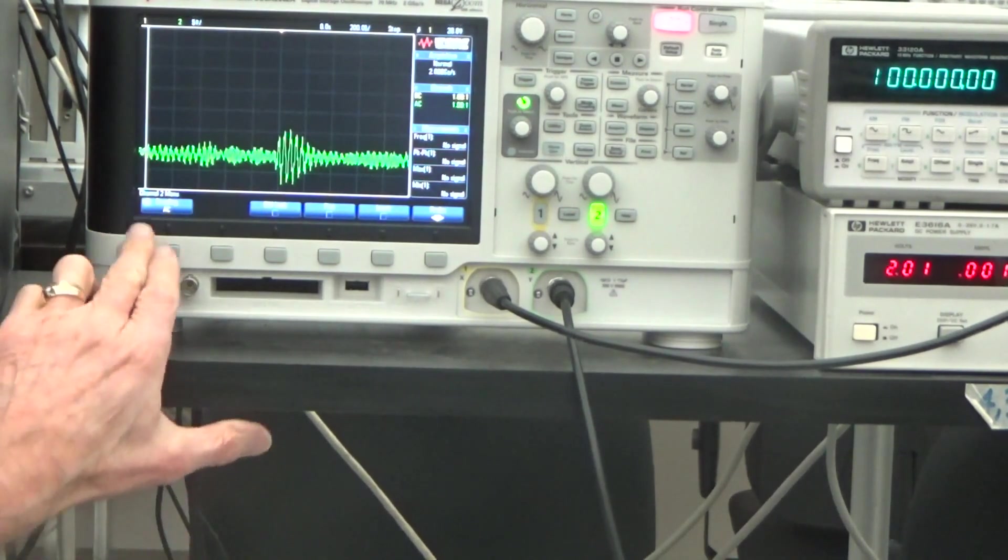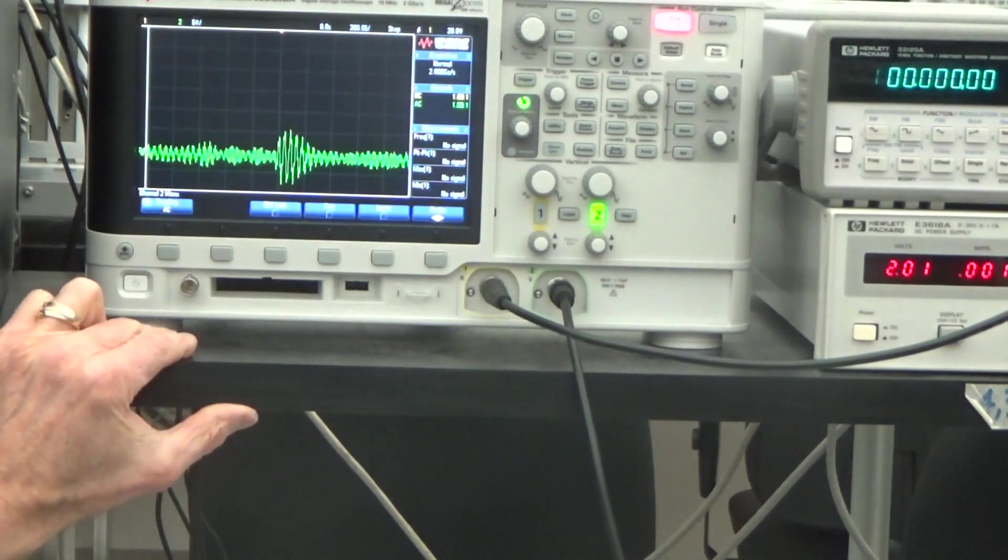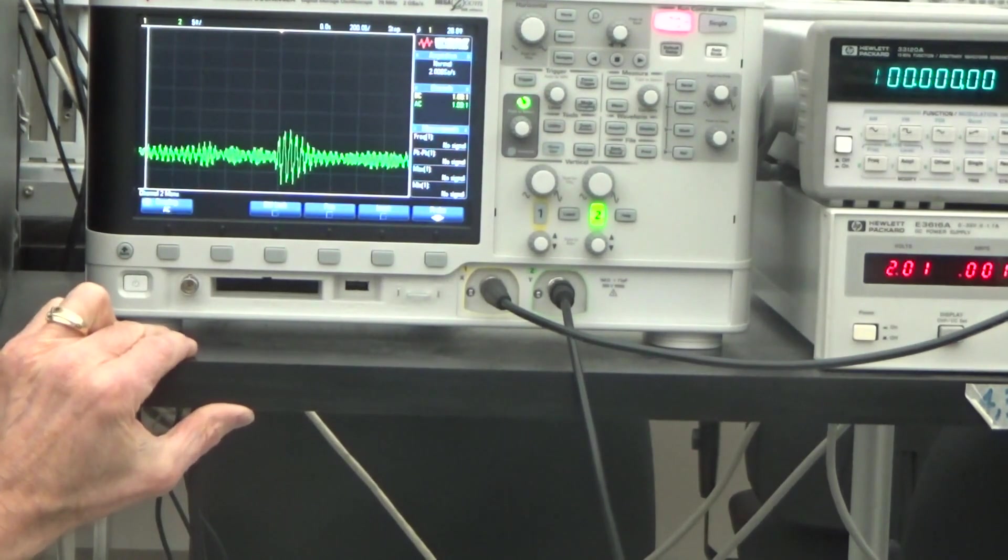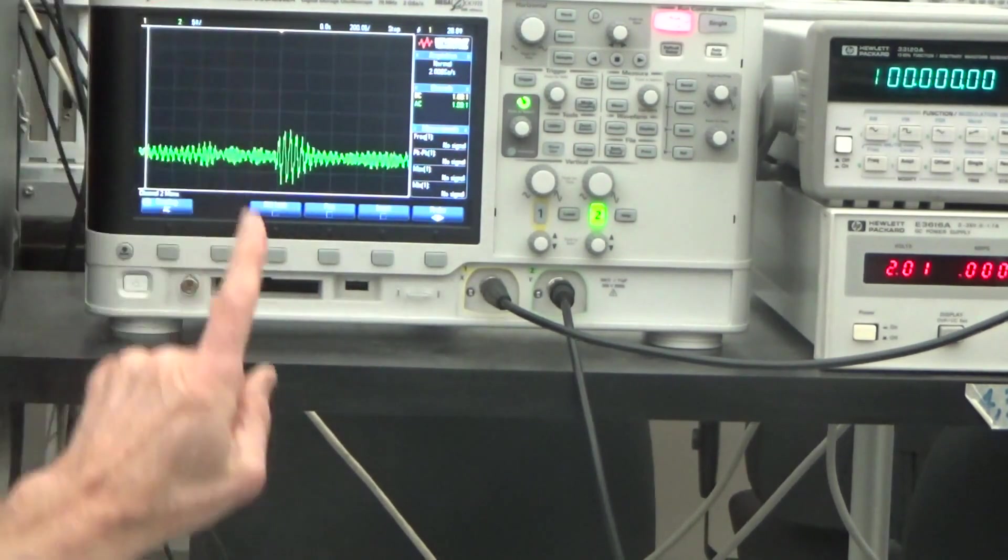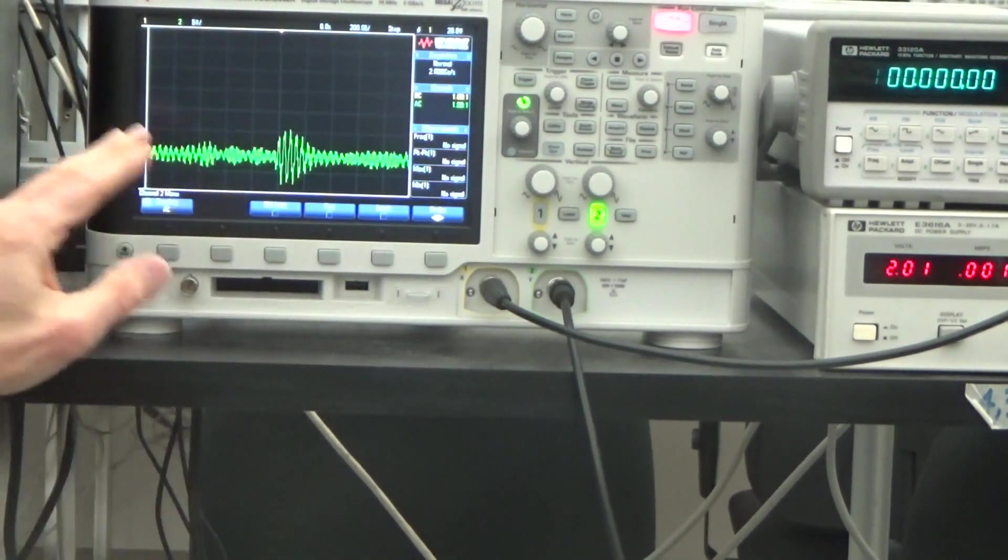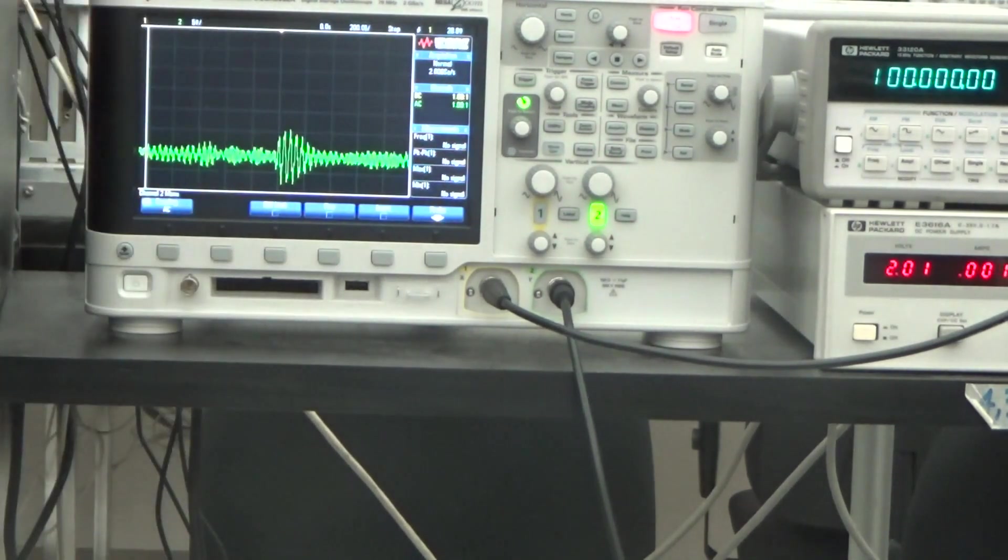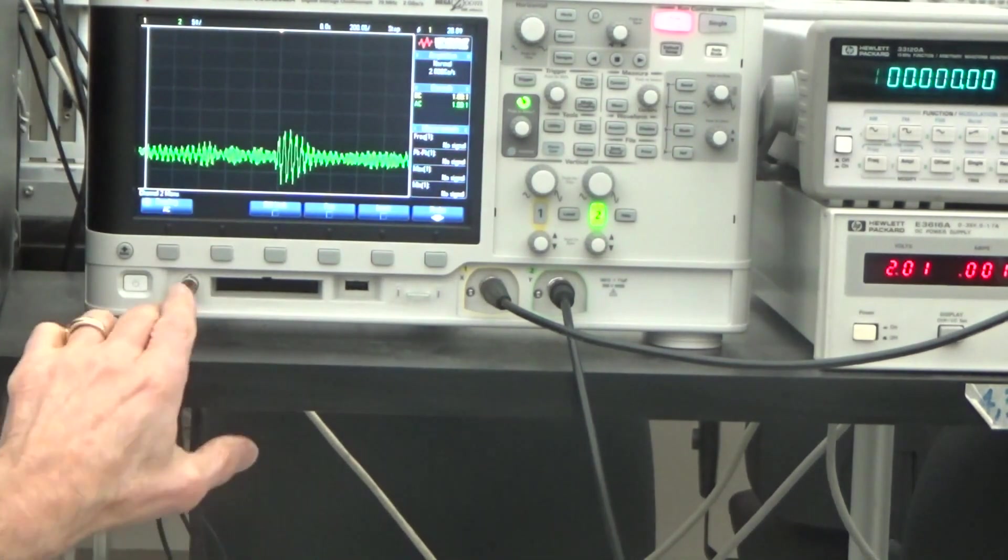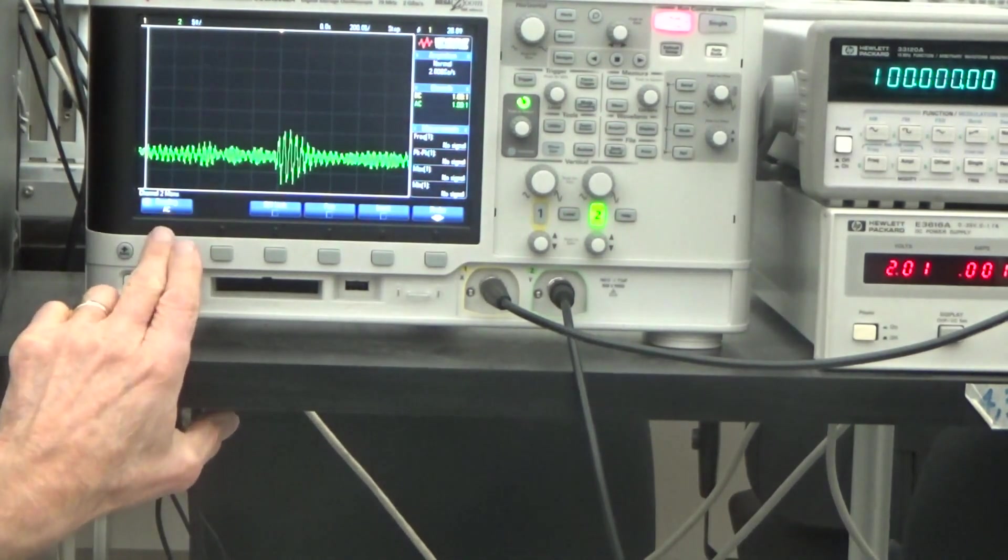But you can only see it if you AC couple the signal coming in so that all of the DC is blocked. Because as you saw, as you increase the sensitivity, the 2 volt just takes it, be up at the ceiling someplace like that. That's where the level would be. So we can't do that. So we need to AC couple the signal.